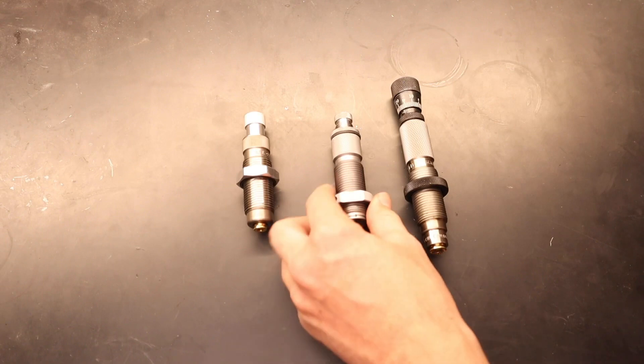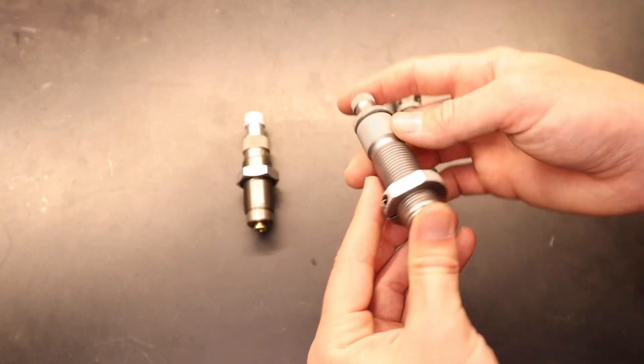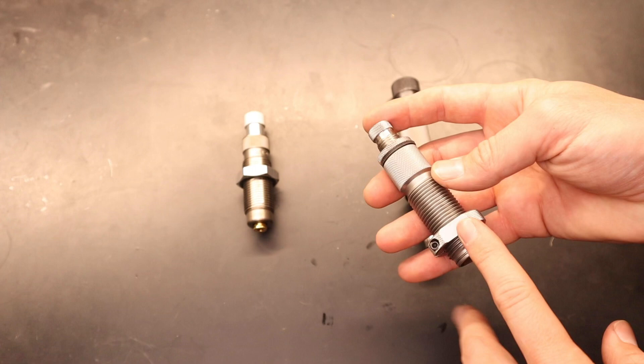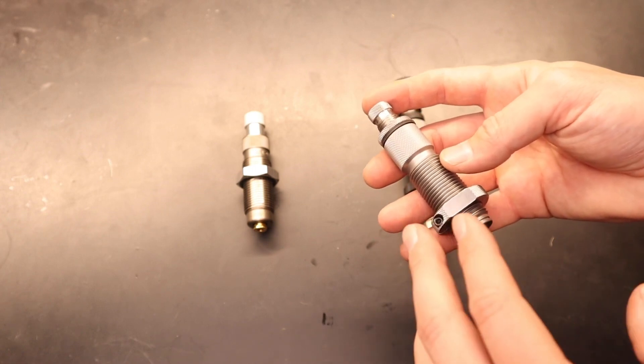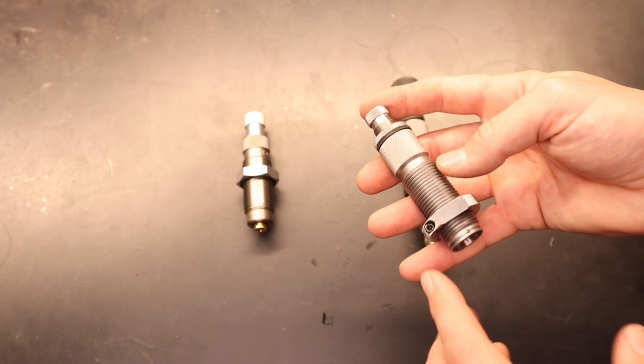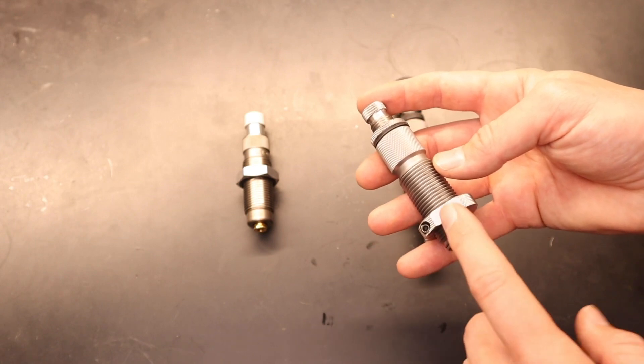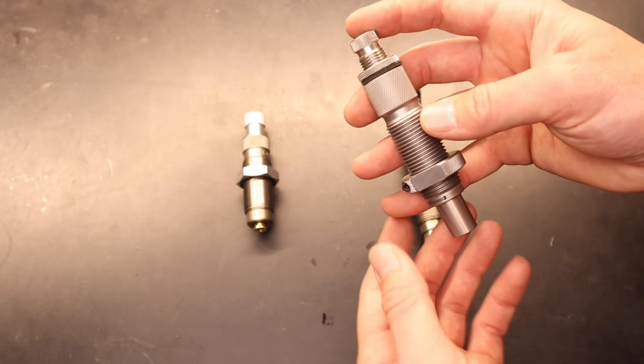Next up is our Hornady Universal Seeding Die. Now this one does come in kits where it has specific cartridges, but the only specific die in those cases is actually the resizing die. So the seating dies are universal, and I'm going to show you why.